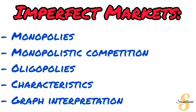Next we get into imperfect markets — markets not characterized by perfect competition. We have three of those: monopolies, monopolistic competition, and oligopolies. All of these markets, including perfect competition, have individual videos on this channel, so make sure you go look at those as a refresher. They can be a good summarized reminder, especially if you're doing last-minute preparation.